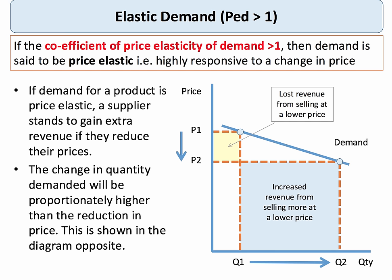Here's a more elastic, price-sensitive, shallow-gradient demand curve. A fall in price is better news for the producer here. If they cut the price from P1 to P2, the supplier stands to gain extra revenue, because the change in quantity demanded from Q1 to Q2 is proportionately higher than the reduction in price. The blue area — extra revenue from selling more units — is bigger than the yellow area from selling at a lower price. So when demand is elastic, a fall in price increases total revenue.